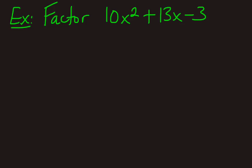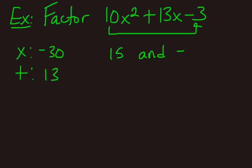So same first step, 10 times negative 3. So what multiplies to get us negative 30 and adds to get us 13. So what two numbers do that? All right, so my two numbers are positive 15 and negative 2. 15 times negative 2, negative 30. 15 plus negative 2, 13.